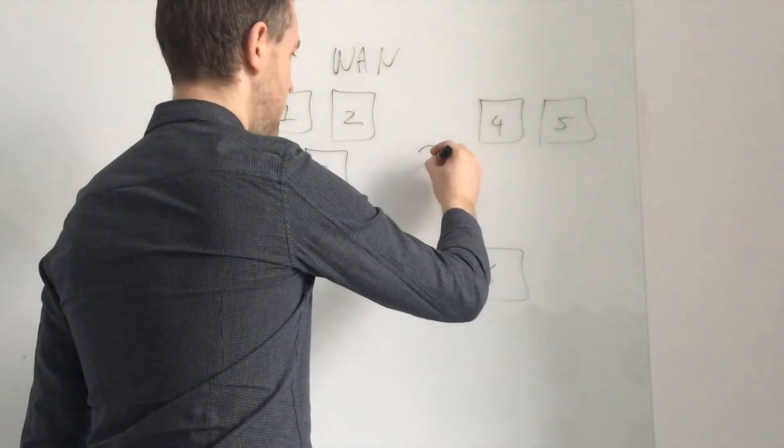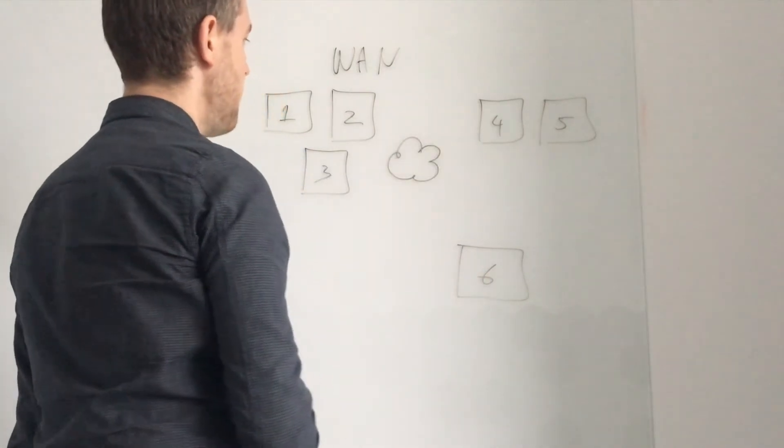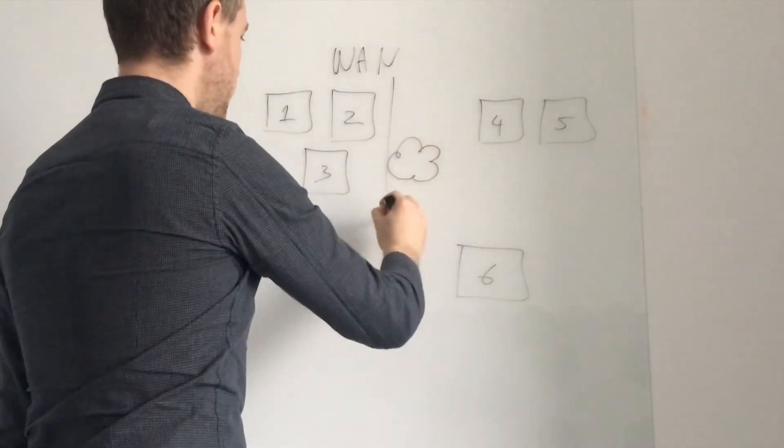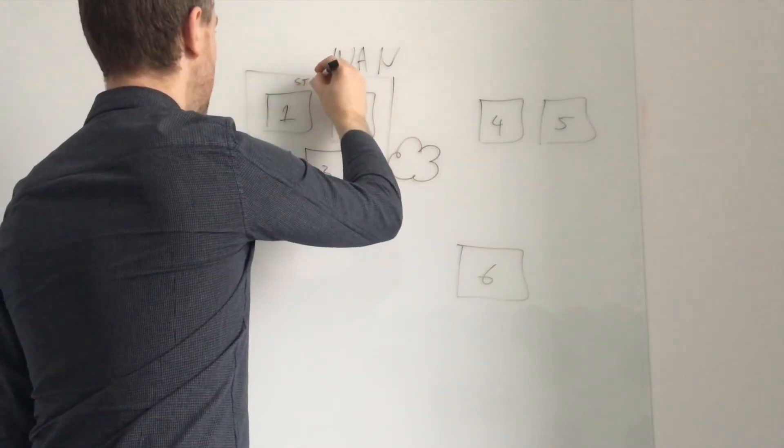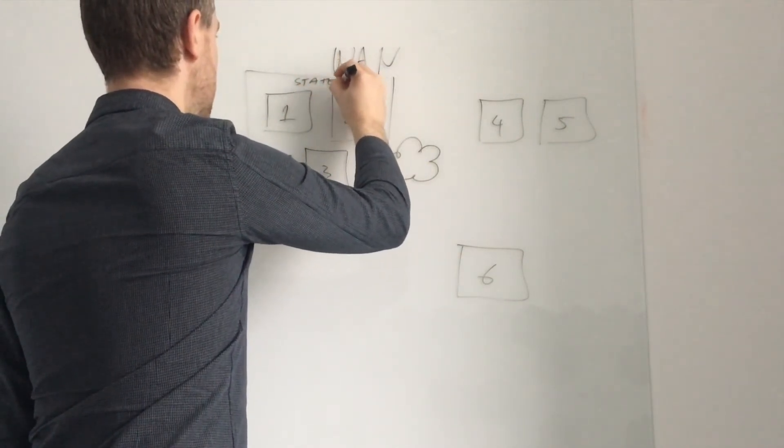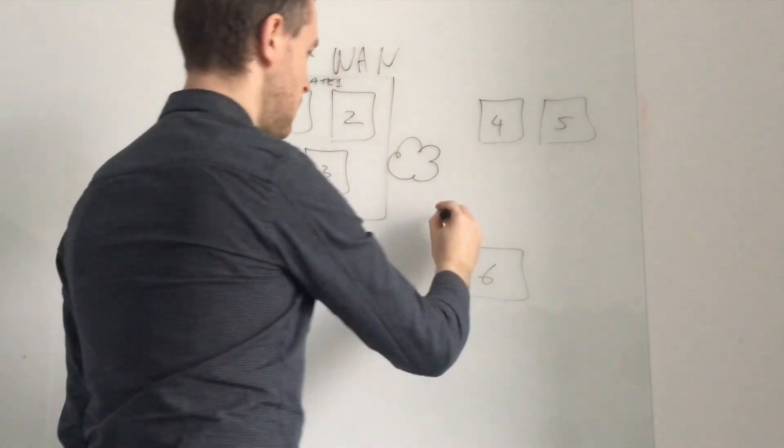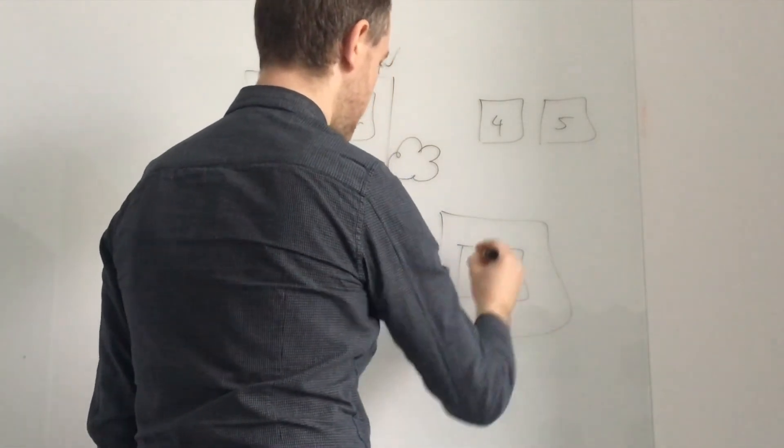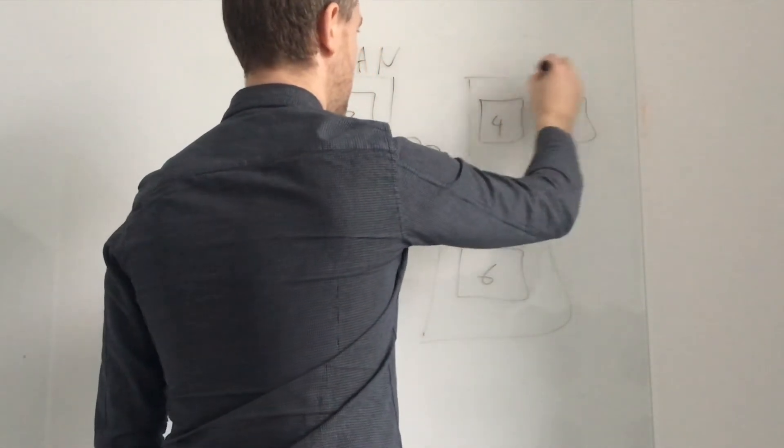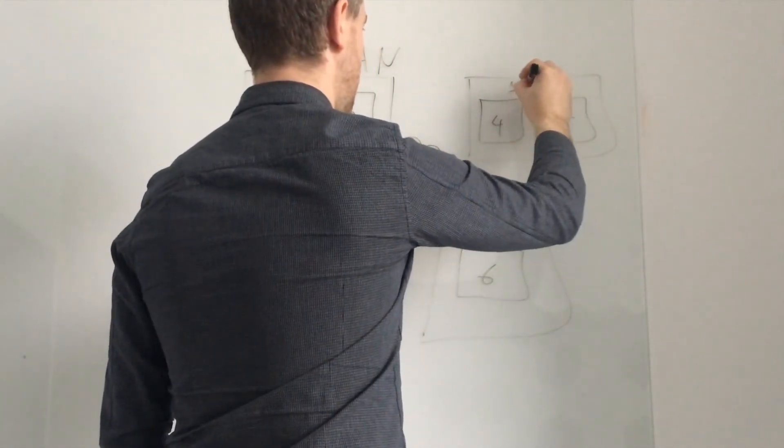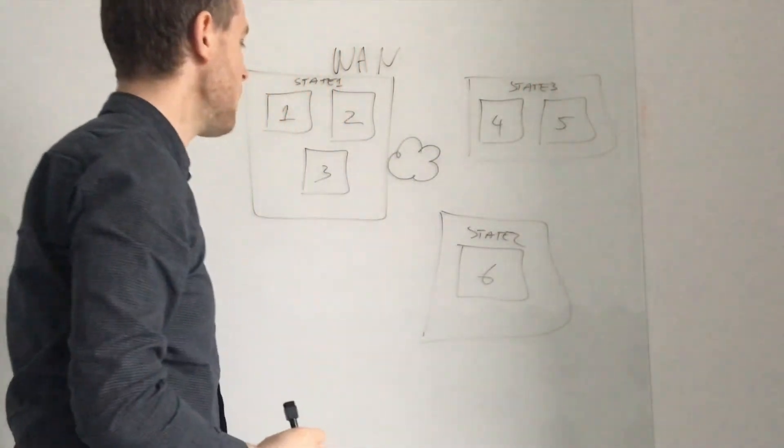And we'll draw a nice internet cloud here. And what we could have is this is in a different state. State one. This is in a different state. State two. And this could be a state three.